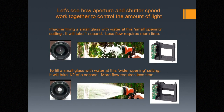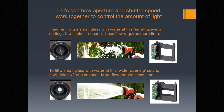Let's see how aperture and shutter speed work together to control the amount of light. Imagine filling a small glass with water using a small opening — it'll take about a second for the water to pass through. Less flow requires more time. On the lower example, we use a wider opening, so the flow increases, and we cut down the time the hose is on. More flow requires less time — a shorter shutter speed.